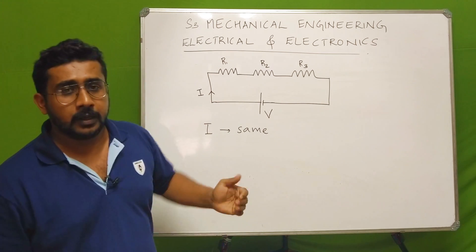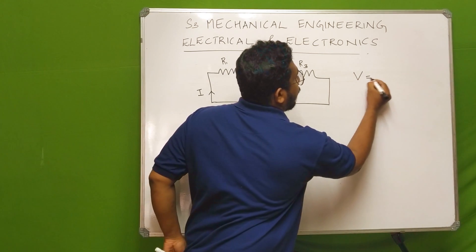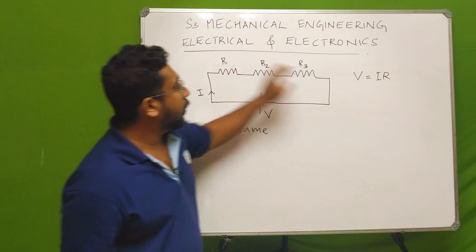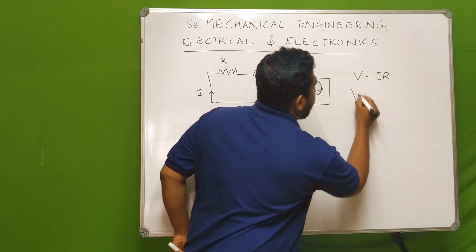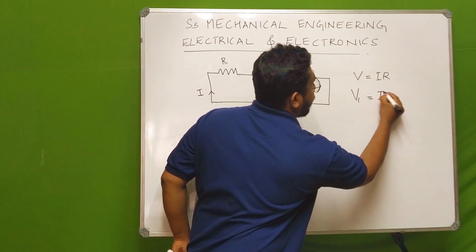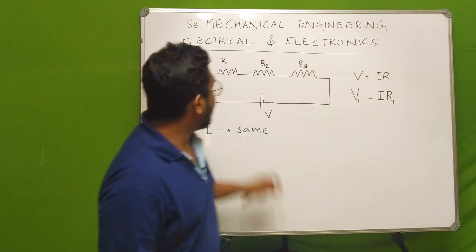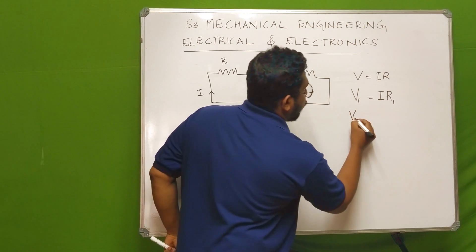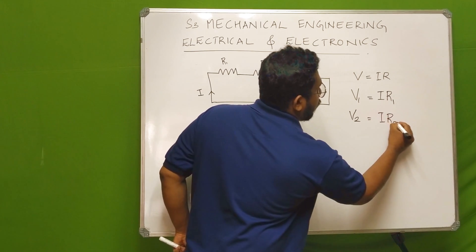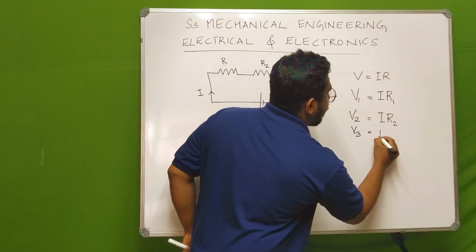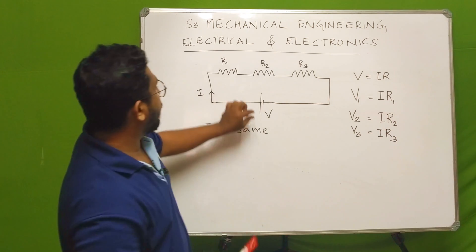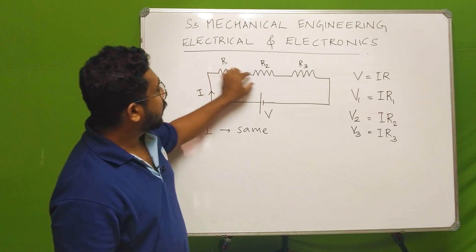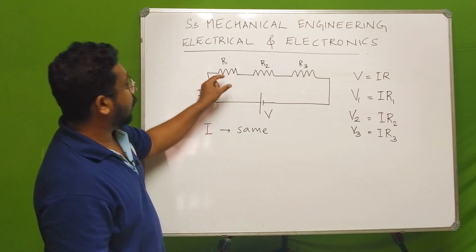So we can drop voltage. We have V equal to IR. If we drop the voltage across R1, we can write V1. If we drop V2, then V2 = IR2. Similarly, V3 = IR3. So V1, V2, V3 are the individual voltage drops. The current is the same throughout; the voltage is different across each resistance.